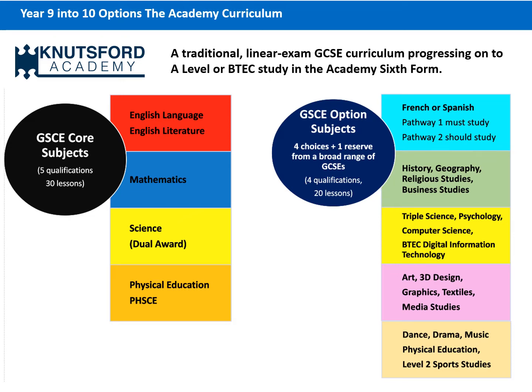Other new subjects include business studies and psychology, which tend to be very popular each year. Just a couple of words of warning on those two: it's a common misconception that students have to do those subjects now if they want to do them at A level, and that's not true — you can start either business studies or psychology A level from scratch in Year 12. We only have a limited number of classes — two business studies classes and one psychology class — because of staffing requirements, so every year those two subjects tend to be the area of most compromise needed.